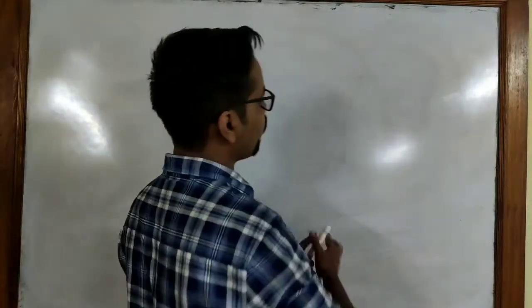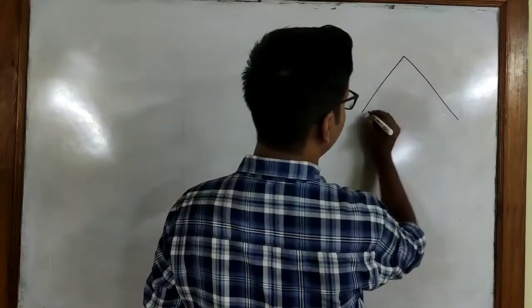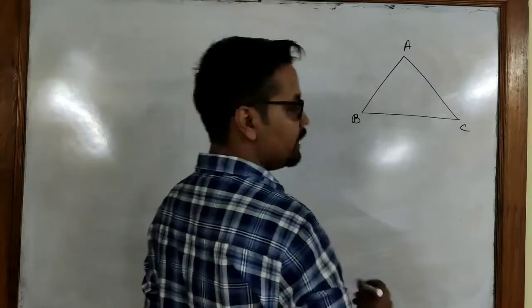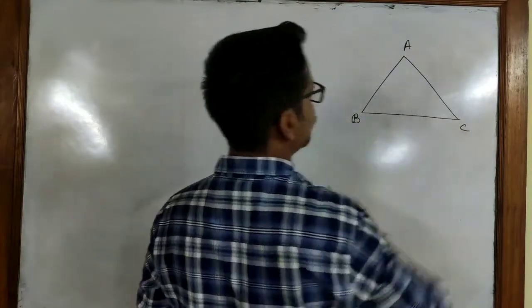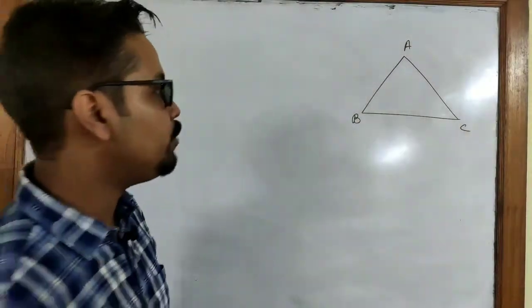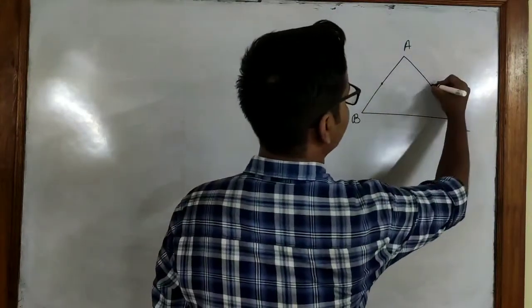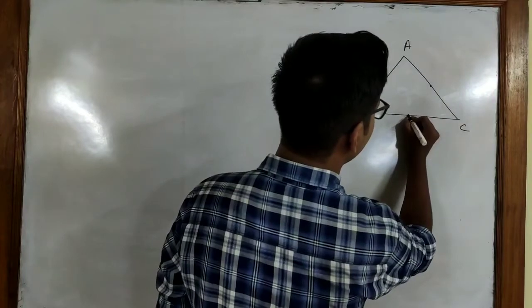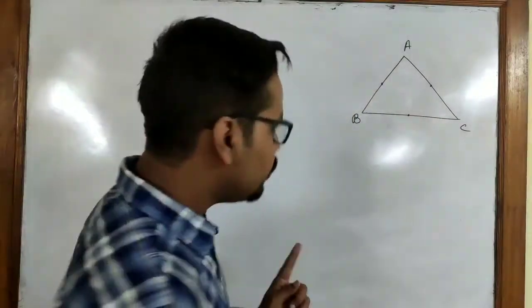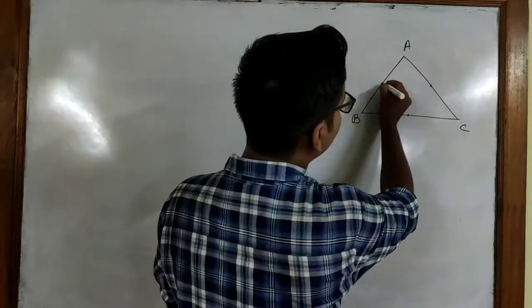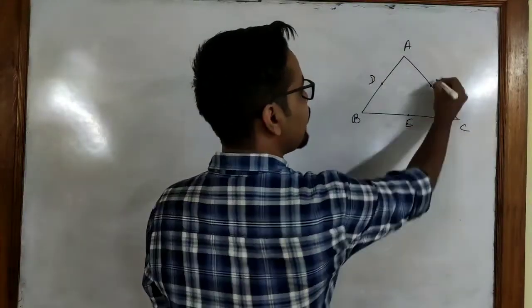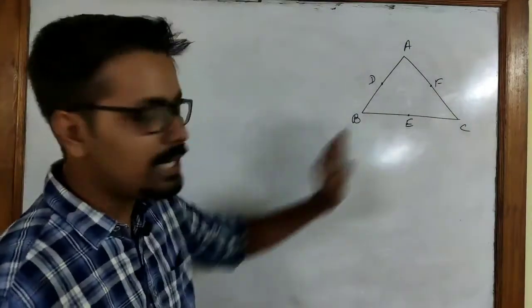I will draw a similar diagram here. So we have a triangle — I'll name it A, B, C. We are going to take the midpoints of all three sides: the midpoint of AB, the midpoint of AC, and the midpoint of BC. Suppose this is our D, E, and M — these are the midpoints.